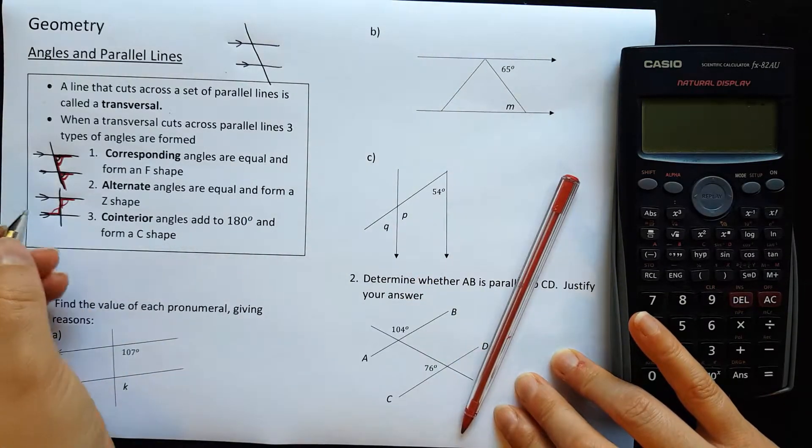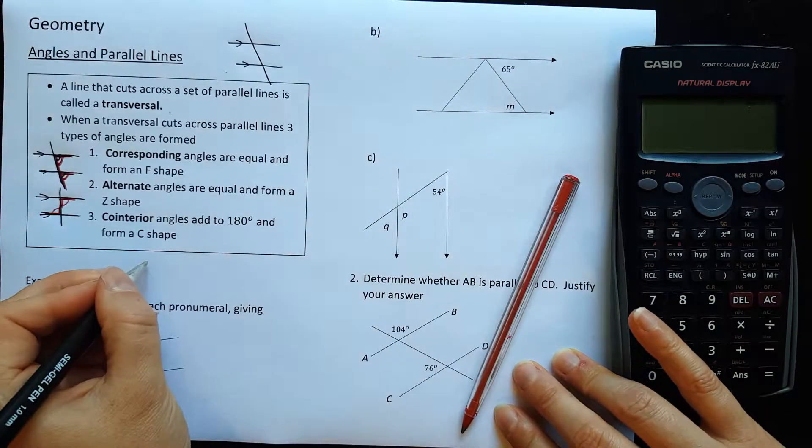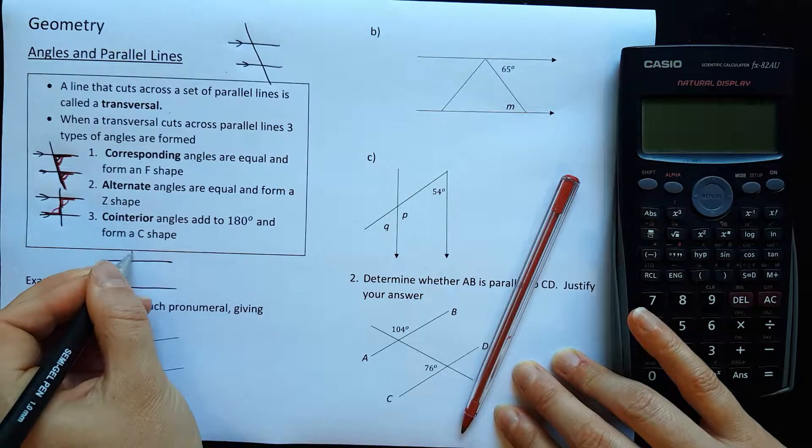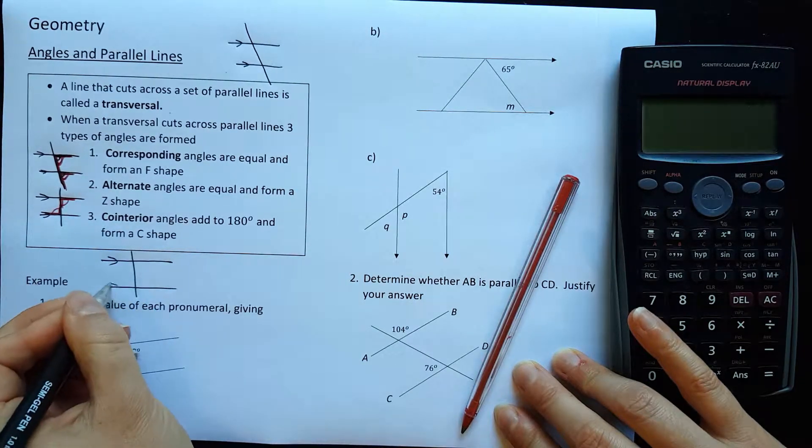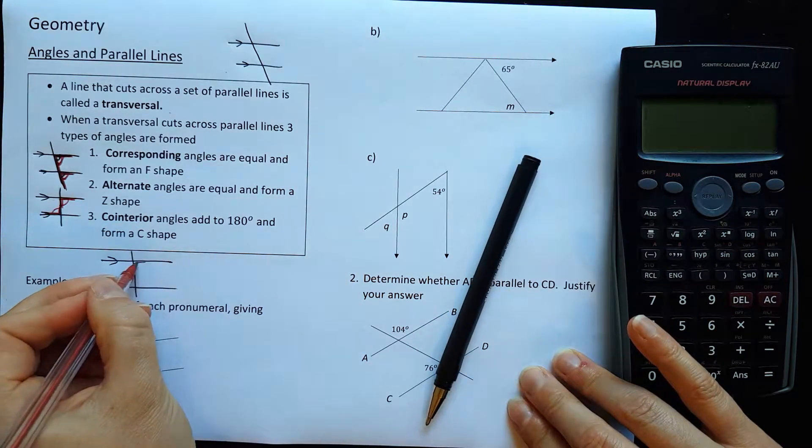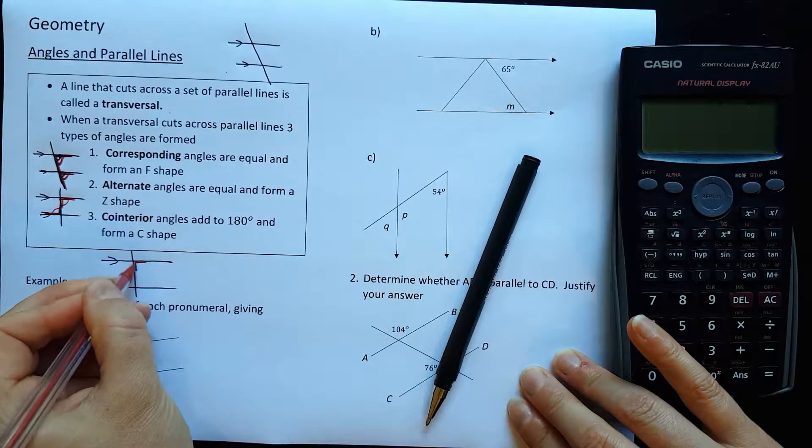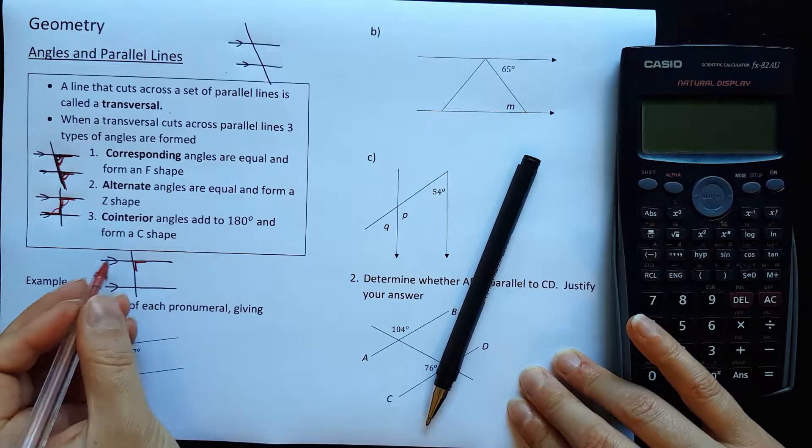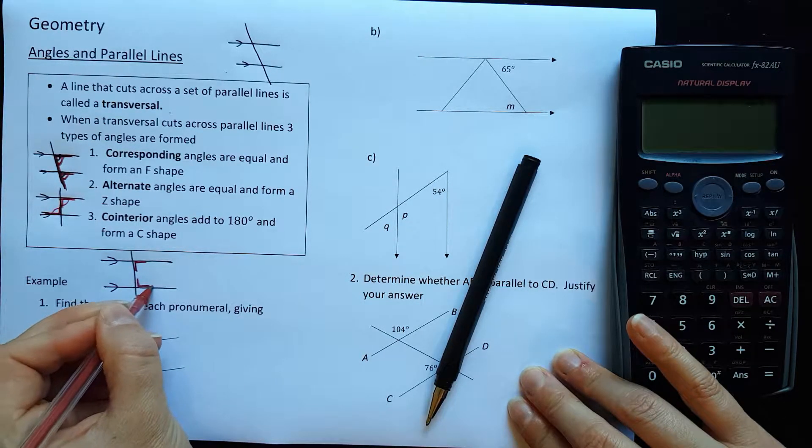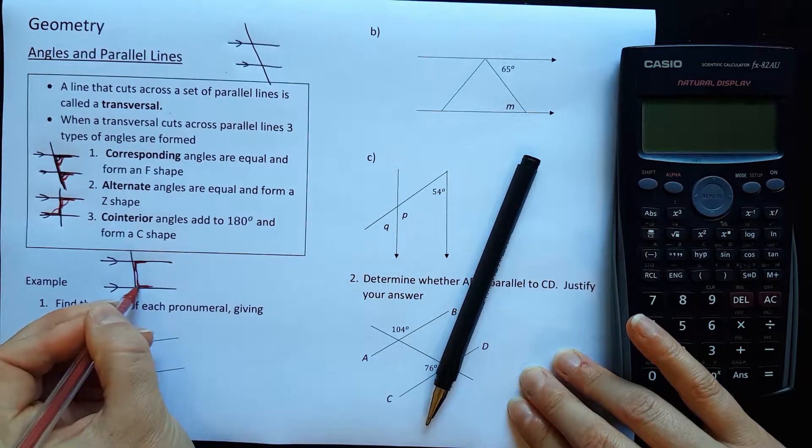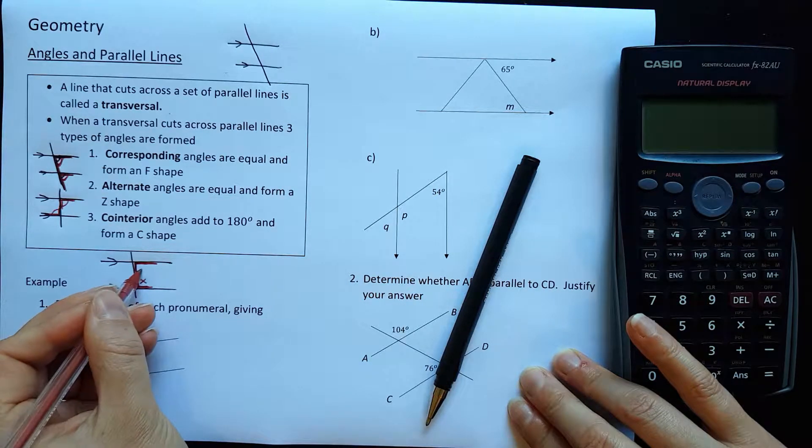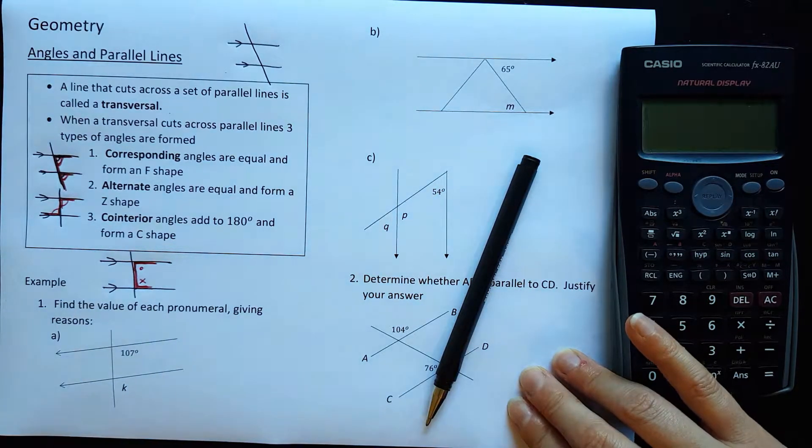And the third type is called co-interior angles. I'll draw that below. Parallel lines cut by a transversal. Co-interior form a C shape, and interior makes me think of inside. Interior of something, so it's the inside angles of your parallel lines. See that there?